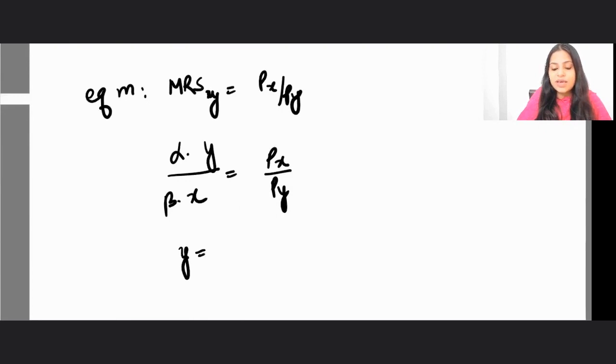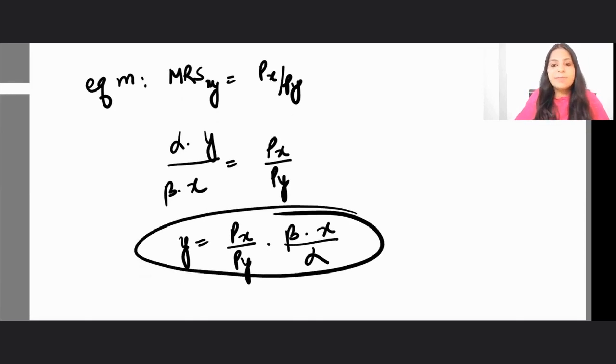So this would have meant that my alpha y upon beta x is equal to px by py. So you could have got your y equals px by py times beta times x upon alpha. This is the value that you would have got.